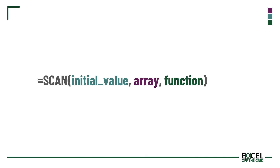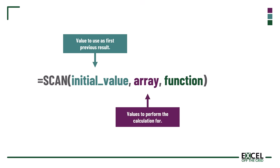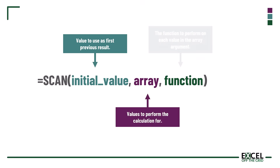SCAN has three arguments. The first is initial value — this is the value to use as the first previous result. The second argument is array — these are the values that we want to perform the calculation for. The final argument is function — this is the calculation we want to perform for each value in the array argument.